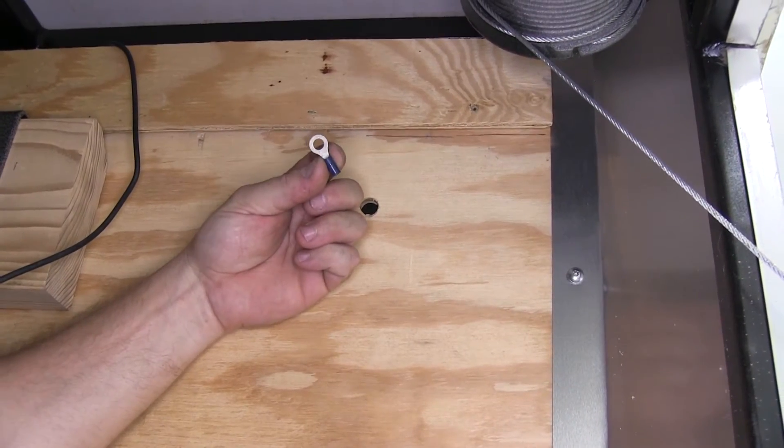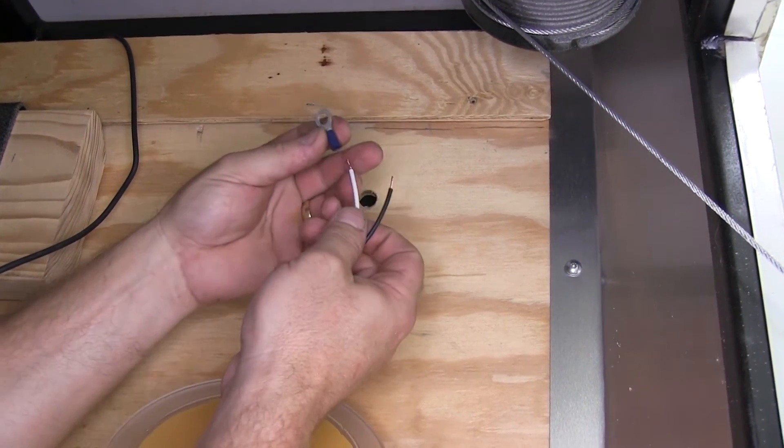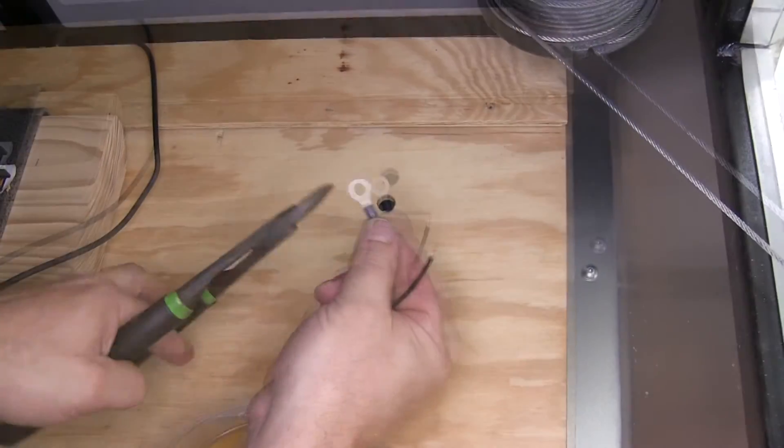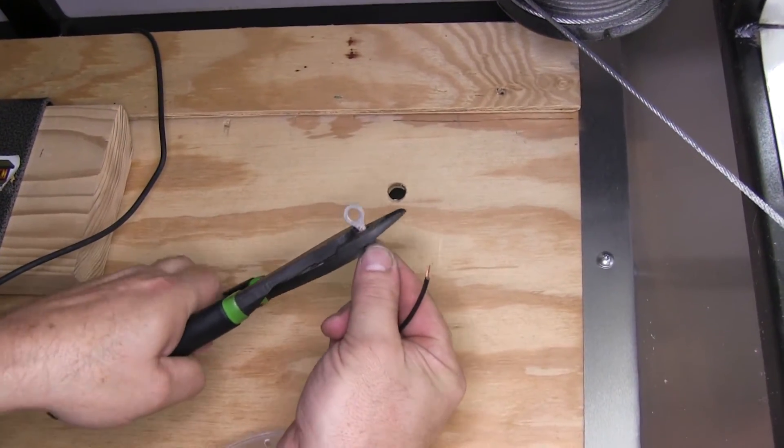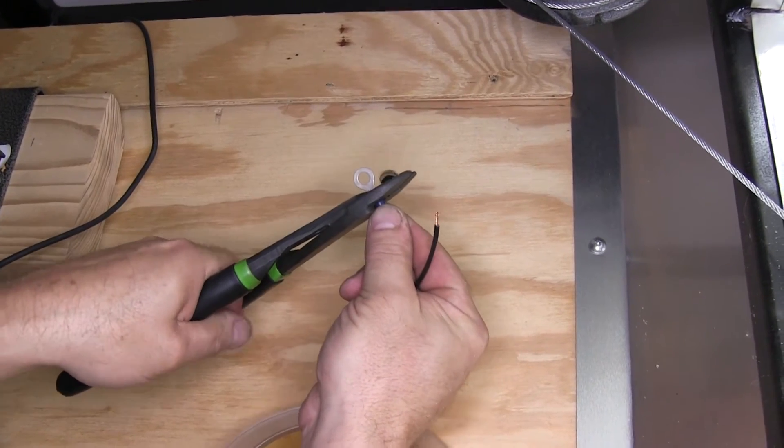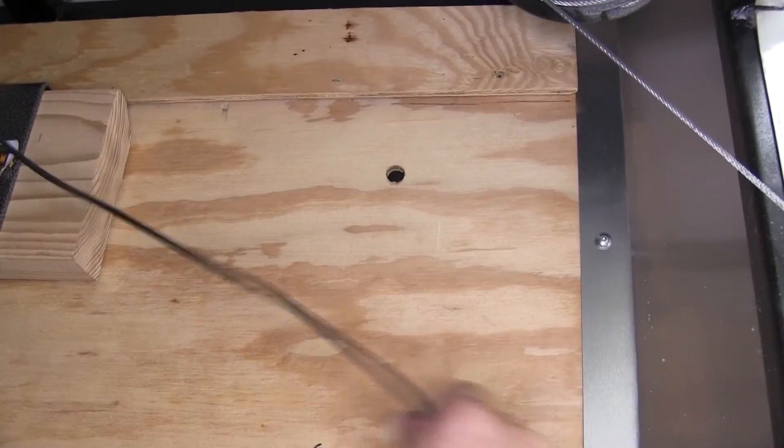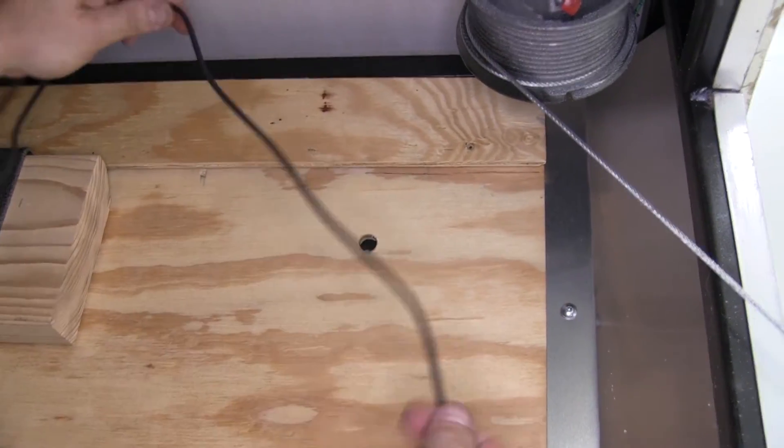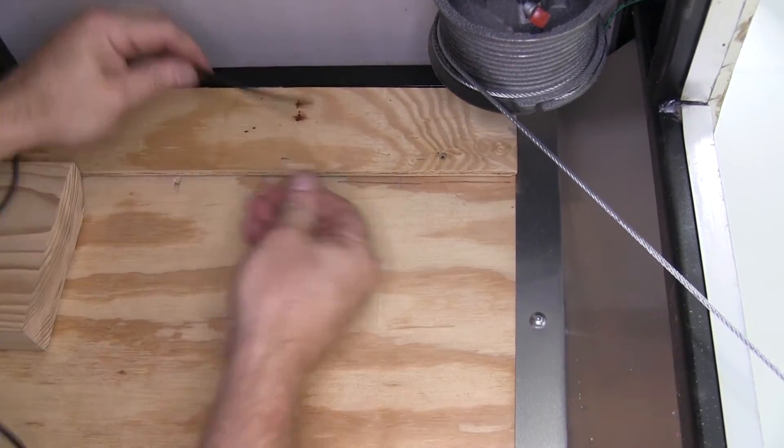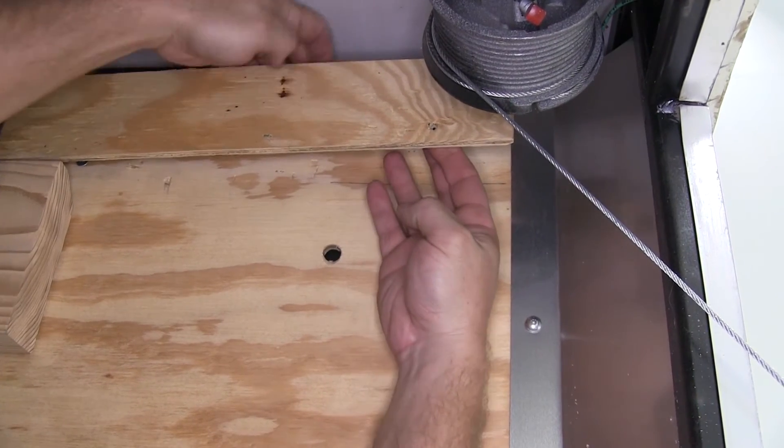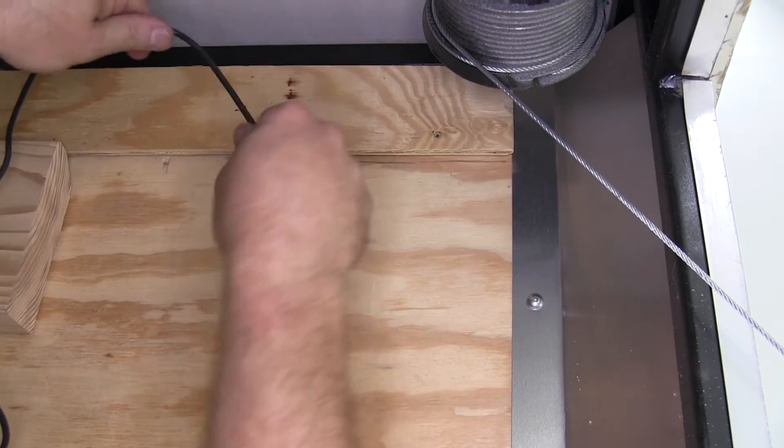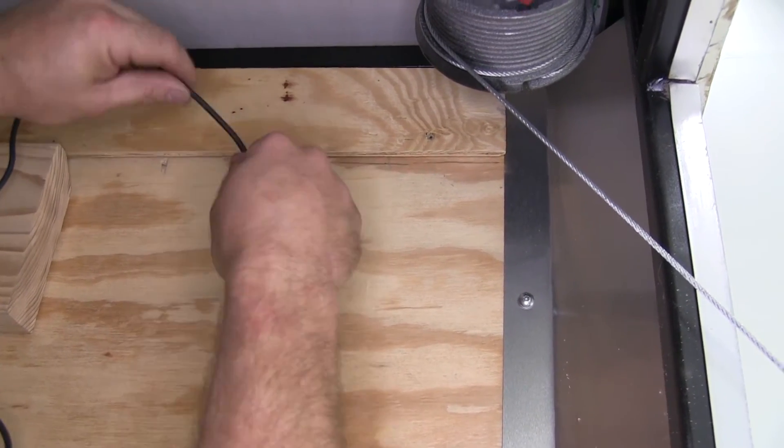We're going to need to add a ring terminal to the white wire here. We'll slide our ring terminal down onto it and then crimp it down. Next, to make things a little bit easier, I'm going to take my power wire that I ran from the front of the trailer here towards the back and fish it behind the wall and make it come out my hole here.